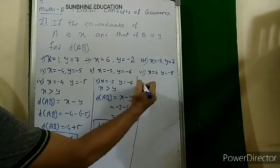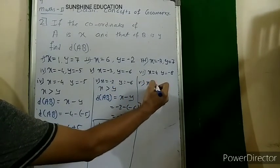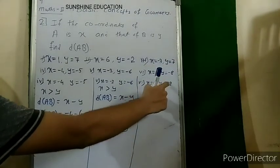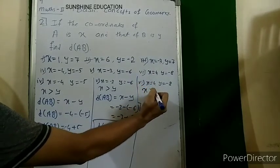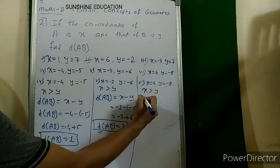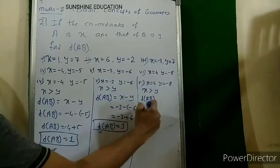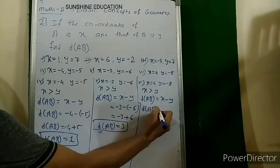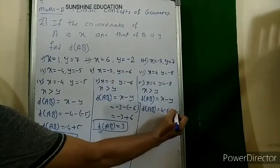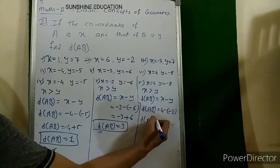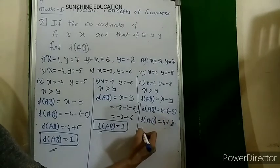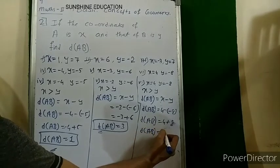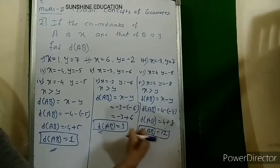Sixth sub-question: x = 4 and y = minus 8. Positive is greater than negative, so x is greater than y. Distance AB = x minus y = 4 minus (minus 8) = 4 plus 8 = 12.